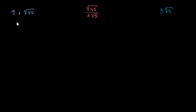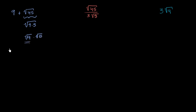Let's think about that a little bit. The square root of 45 is the same thing as the square root of 9 times 5, which is the same thing as the square root of 9 times the square root of 5. The principal root of 9 is 3, so it's 3 times the square root of 5. So this is going to be 9 plus 3 times the square root of 5.